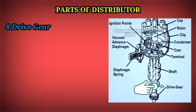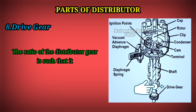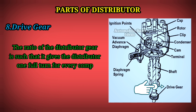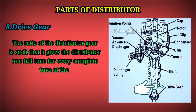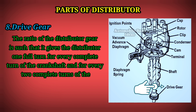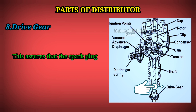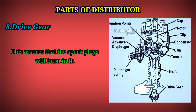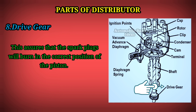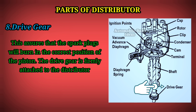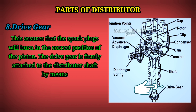8. Drive Gear: The ratio of the distributor gear is such that it gives the distributor one full turn for every complete turn of the crankshaft and for every two complete turns of the camshaft. This assures that the spark plugs will fire at the correct position of the piston. The drive gear is firmly attached to the distributor shaft by means of a steel roll pin.